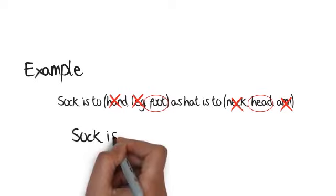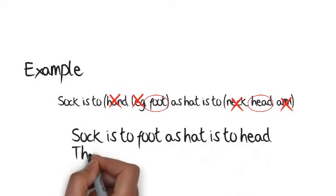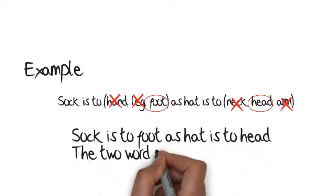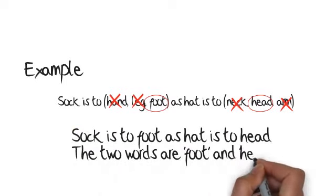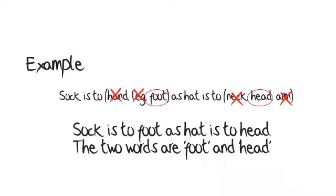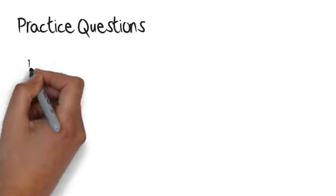So now you have the relationship and the two missing words from the sentence. The relationship is: word one is worn on word two. Sock is to foot as hat is to head. The two words are foot and head.